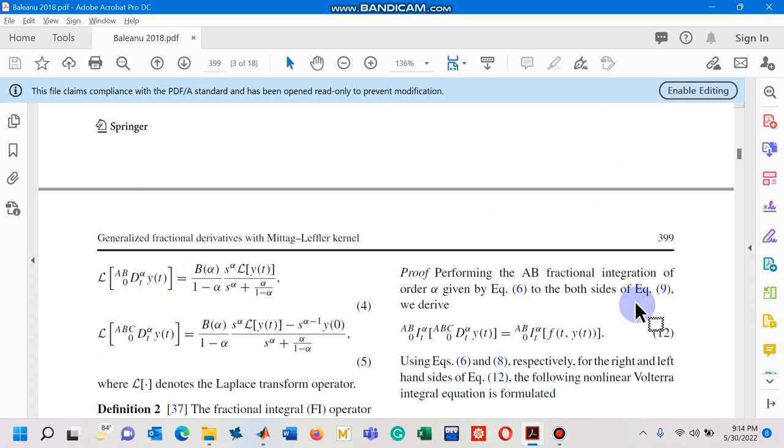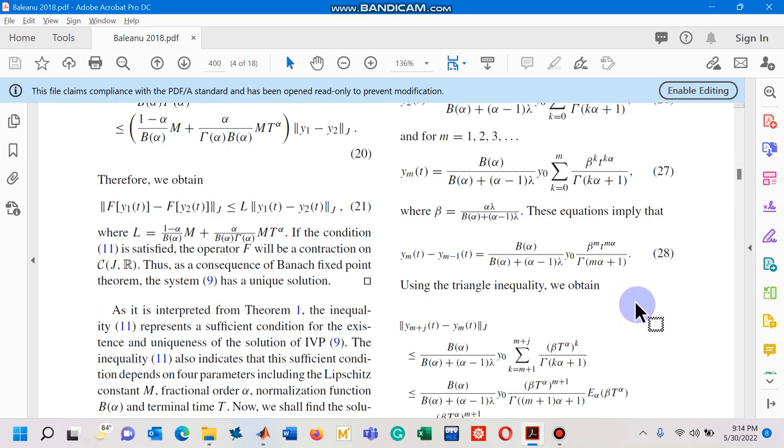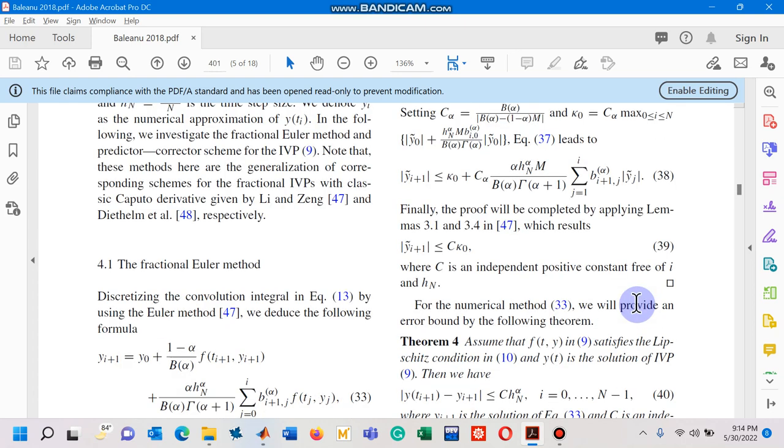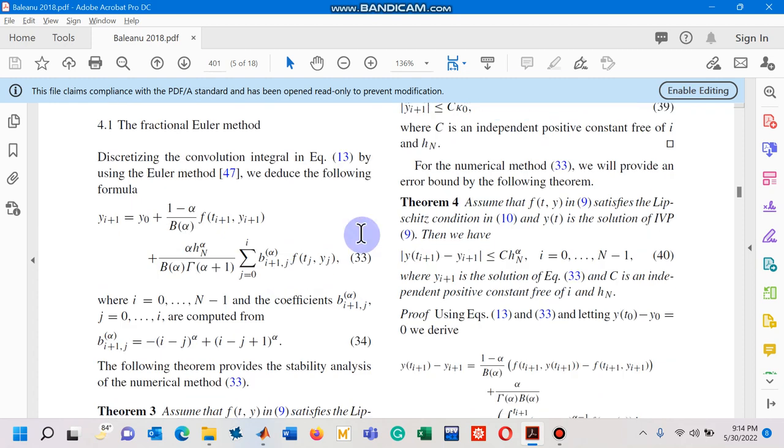Let me show you the numerical scheme. So, the numerical scheme is known as fractional Euler method and is given by equation 33. In equation 33, you can see a term P sub i plus 1 with fractional order alpha. This term is defined by equation 34.